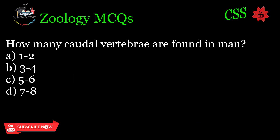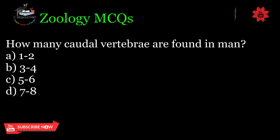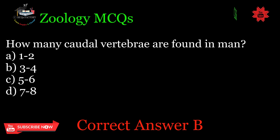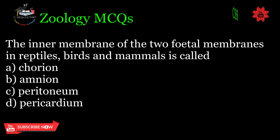How many caudal vertebrae are found in man? A. 1–2, B. 3–4, C. 5–6, D. 7–8. Correct answer: B.